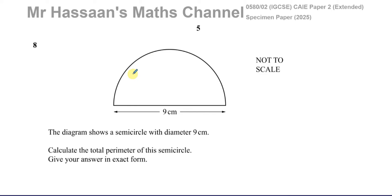Now, we're given this question which shows a semicircle with diameter 9cm. We've got to calculate the total perimeter of this semicircle, giving your answer in exact form, which of course would be sensible when you don't have a calculator.